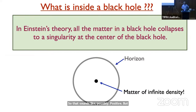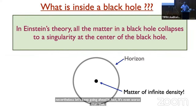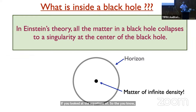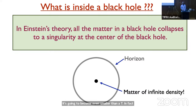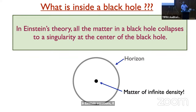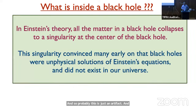In fact it is even worse. If you look at the equations of gravity, gravity attracts — that's what Newton taught us — and Einstein's equations, which are extensions of Newton's equations, show you get a black hole. Once the matter is inside the horizon, it is still attractive, and it is going to become even smaller. As far as we can tell from Einstein's equations, it goes to a singularity at the center of the black hole with infinite density. No one likes infinities in physics because that means you are facing something you do not understand. The singularity convinced many that black holes were unphysical solutions of Einstein's equations and did not exist in our universe.